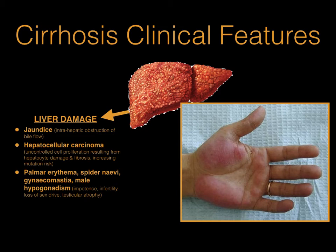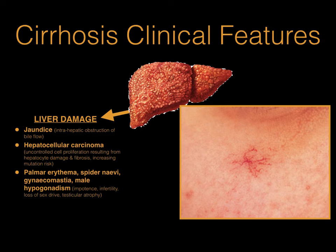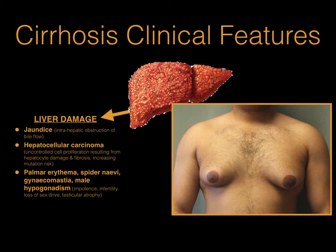Other common features are palmar erythema, or redness involving the palms of the hands, and spider nevi, which are typically seen in the upper chest in the distribution of the superior vena cava and are due to a proliferation of blood vessels in the skin. They consist of a central red area representing a spider's body, with outstretching visible capillaries which represent a spider's legs.